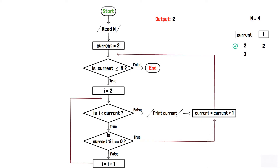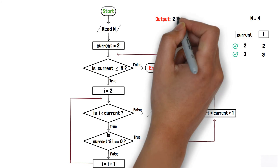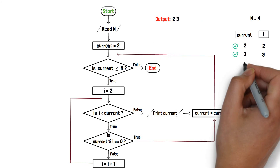Again, 3 is less than or equal to 4, so the first decision box is true. i, which is 2, is less than 3, so the second decision box is also true. Furthermore, 3 modulo 2 is not equal to 0, so the condition in the last decision box is false. Hence, i is incremented to 3. Now, 3 is not less than 3, so the second decision box is false. Hence, 3 is printed and current is incremented to 4.